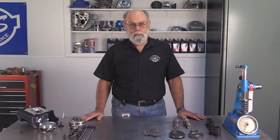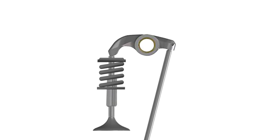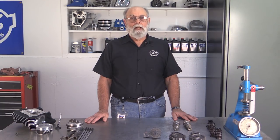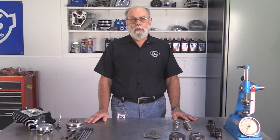Now, what about valve lift? The push rod pushes one end of the rocker arm and forces it upward. The rocker arm is nothing more than a lever, and the valve side that pushes down on the valve stem is longer than the push rod side, so the valve side actually pushes the valve down farther than the cam pushes the push rod end up. The ratio of the length of the valve side to the push rod side of the rocker arm is called the rocker ratio. Multiplying the cam lift by the rocker ratio gives you the theoretical valve lift.